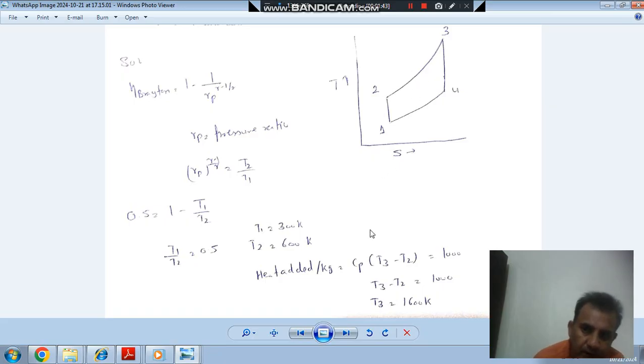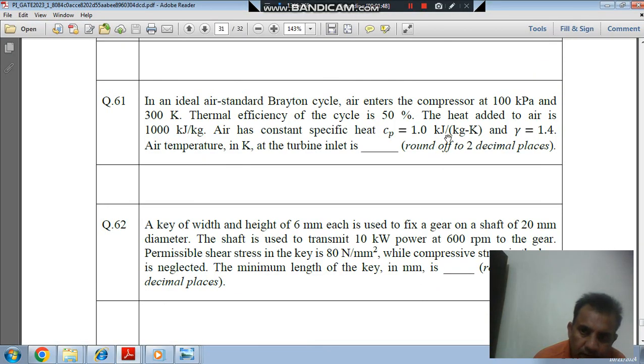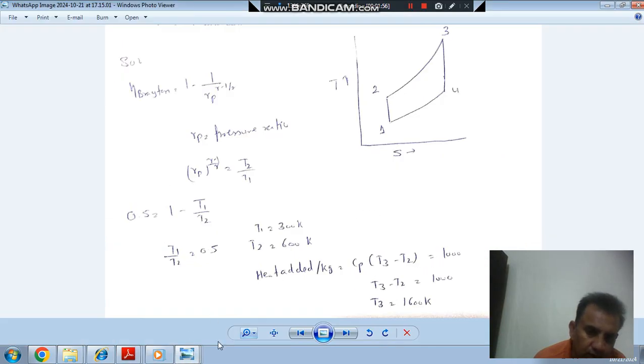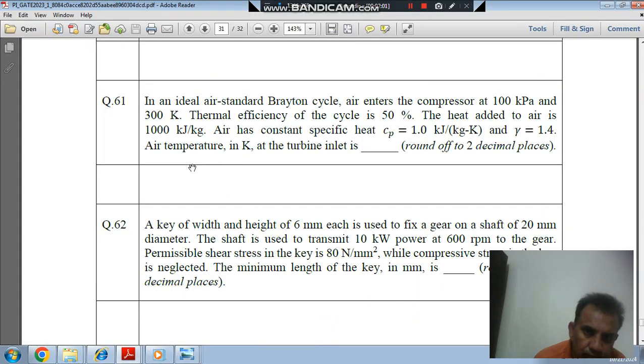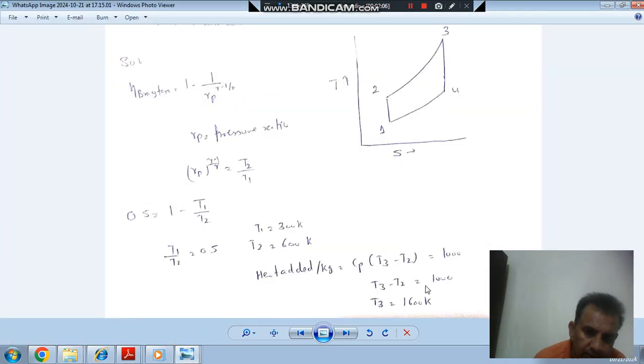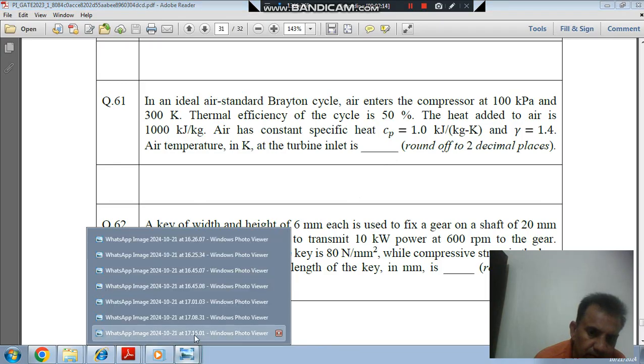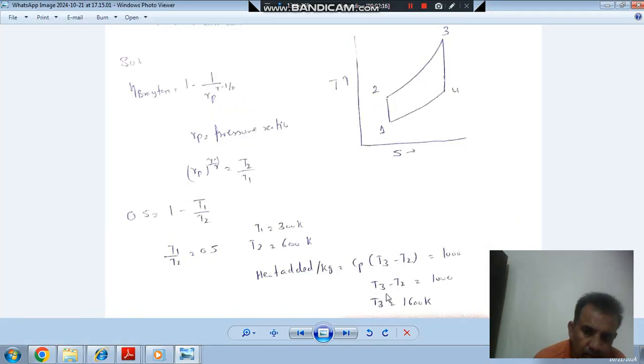Heat added will be Cp(T3 - T2), and heat added is given as 1000 kJ/kg. So T3 - T2 will be 1000. Since Cp is 1, it will be 1000. So T2 is 600 K, 600 K.